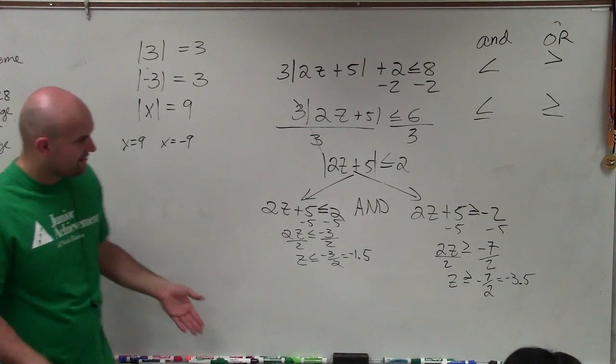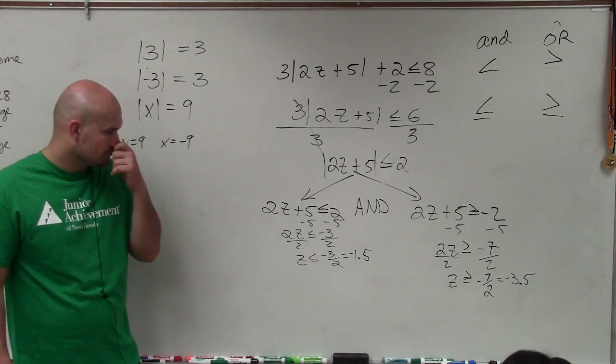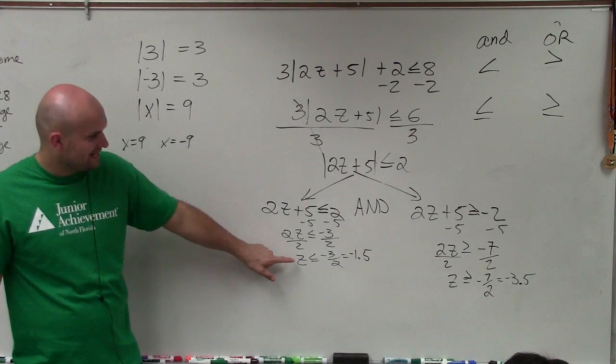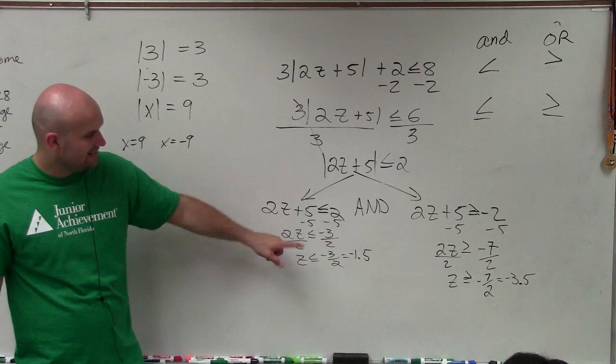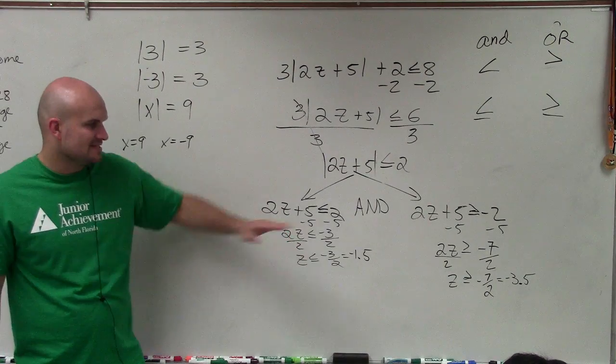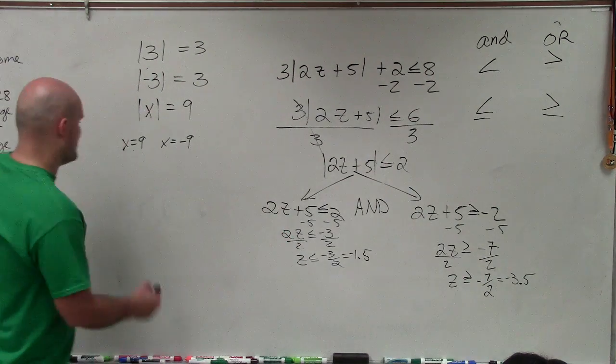So basically, ladies and gentlemen, what I have is y is less than negative 1.5 and, I'm sorry, z is less than negative 1.5 and z is greater than negative 3.5. So how are we going to look, how is that going to look?